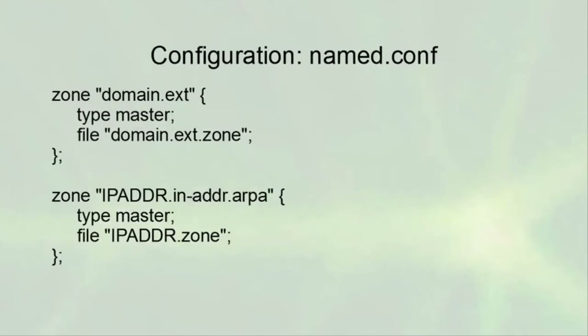The named.conf file contains different zone entries. For example, an entry for domain.ext would have type 'master' because you own and control it, and list a file such as domain.ext.zone. For IP addresses, if doing the entire 10.0.0.0 range, you would use zone '10.in-addr.arpa', set it as master, and name the file something like 10.0.0.0.zone. You have to look at the rest of the configuration to figure out where things are stored.